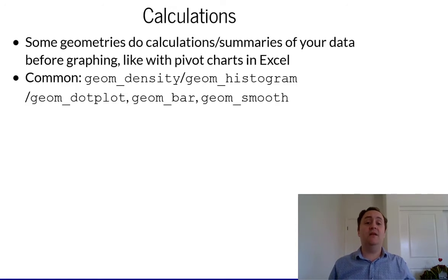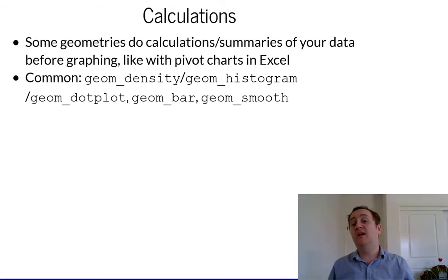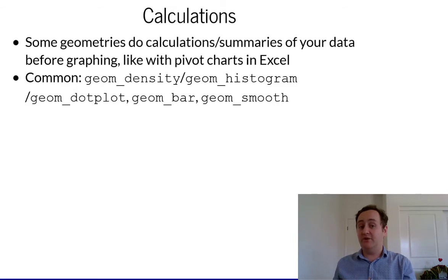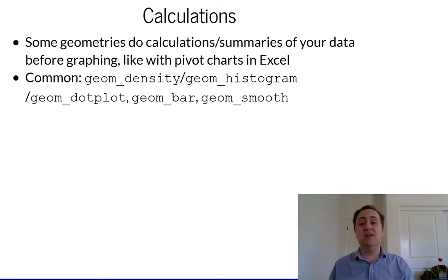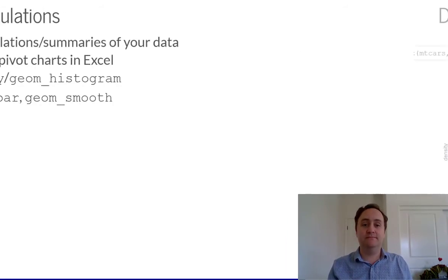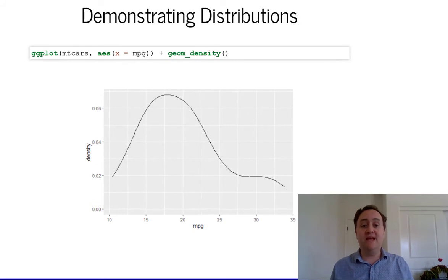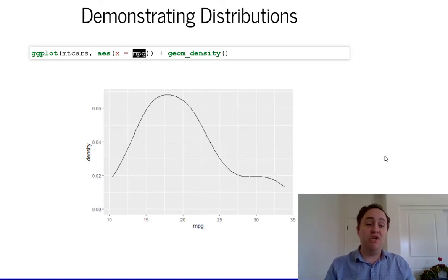There are some geometries that do a calculation for you before graphing the data. Instead of graphing each data point, it will graph the calculation. geom_density and geom_histogram will do density plots or histograms. geom_bar will do a count — how many observations are there of each type. geom_smooth will fit a line to your data; you can do a regression line or a LOESS curve. Here's an example of a density plot: instead of showing me each value of MPG, it's showing the distribution of MPG.